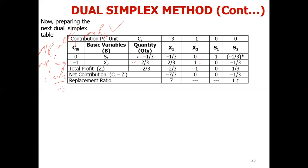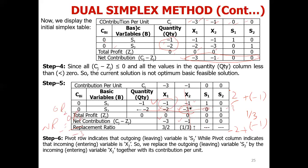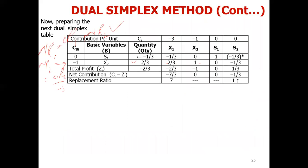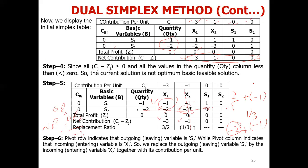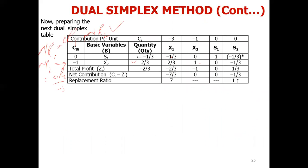Using these row operations, we complete the updated tableau. New R1 equals old R1 plus new R2 using the appropriate multiplier. When 1 plus minus 1 equals 0, and 2/3 plus minus 1 gives minus 1/3, and so on. Old R1 from the previous table plus the corresponding multiple of new R2 gives us the complete new R1.